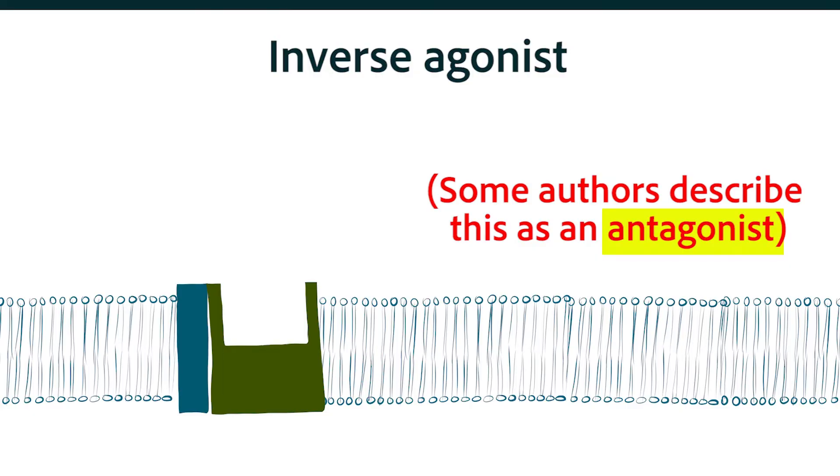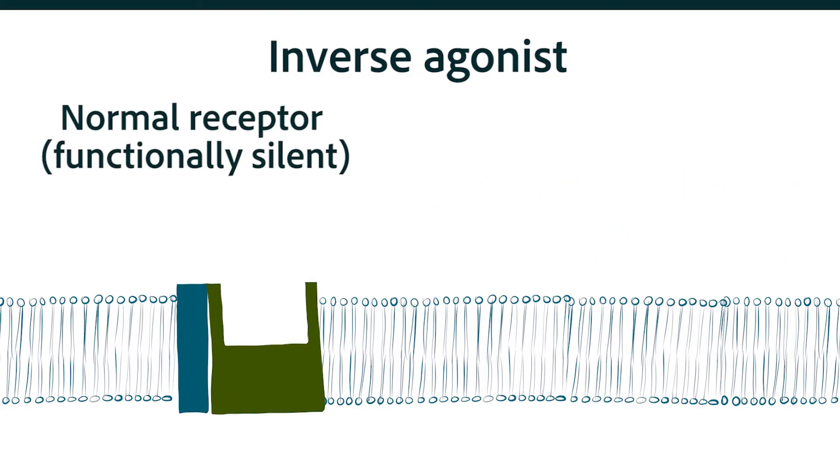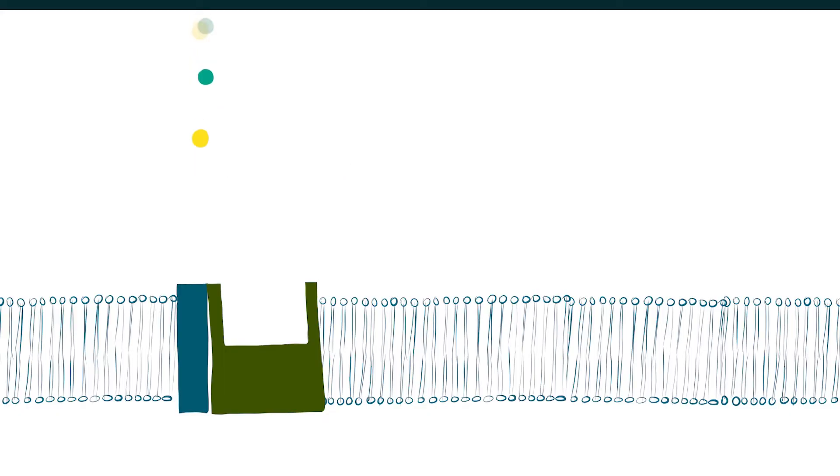But it's good to try to fully understand what an inverse agonist is. Normally, when a receptor is not bound, it is functionally silent. Nothing is happening at the receptor. The protein is not causing those flow-on effects you would normally expect if it was bound. Applying this to our ion channel receptor, when the receptor is not bound, the gate is fully closed and no ions are coming through that channel.